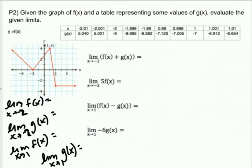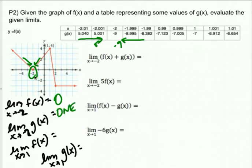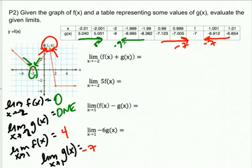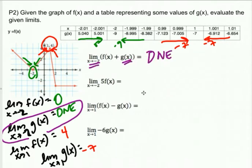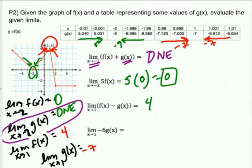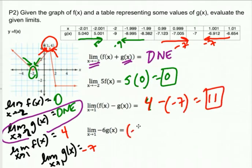On the graph, at negative two, both the left and right sides are walking to a Y value of zero. On the table at negative two, one side is walking to five but the other to negative nine, so that does not exist. On the graph at one, both the left and right are walking to a Y value of four. On the table, both sides approaching one seem to walk to negative seven. So anything with G of X at negative two is does not exist.